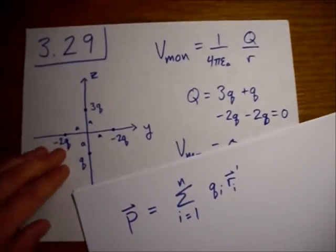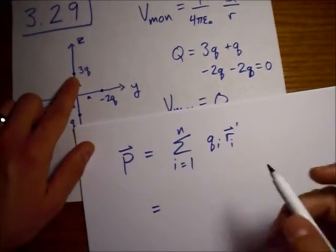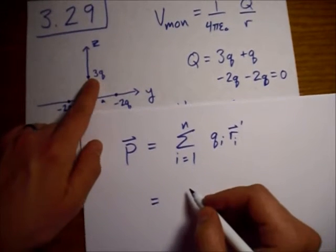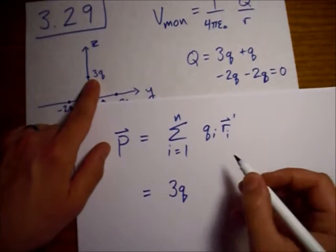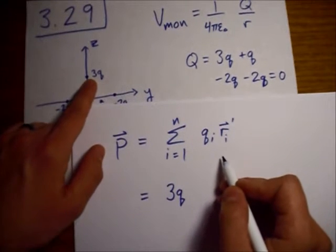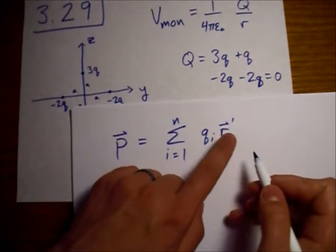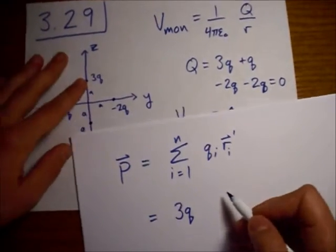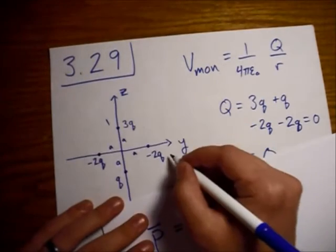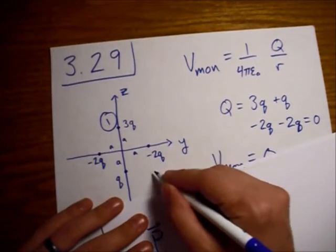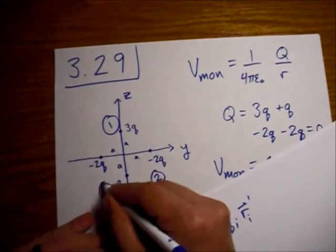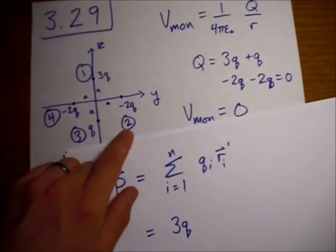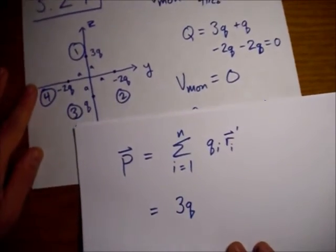All right. Let's start with this one. So, qi, in this case, is 3q. And now we need to multiply it by this r prime vector for this first charge. Let me go ahead and number them. So, 1, 2, 3, and 4. Okay. This is the value of i as we go through this sum.